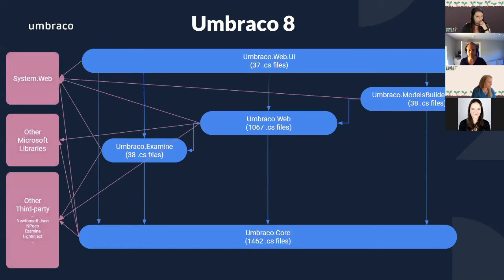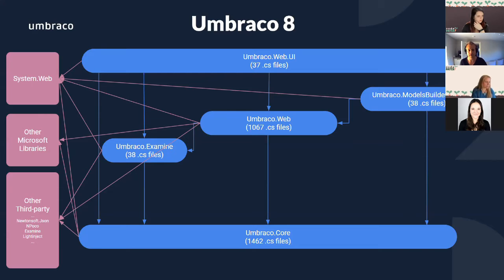The issue with migrating to .NET Core is that all of our assemblies have a lot of dependencies on third-party projects. Basically all of our assemblies know about JSON.NET, NPOCO (which is our object-relationship mapper), EXAMINE, and so on. To migrate Umbraco into .NET Core, we also need to update all our dependencies to compatible versions. So the first step was to re-architect to make as much of the code base as possible free of these third-party dependencies.